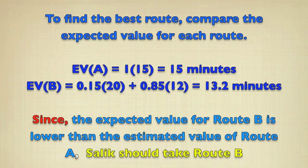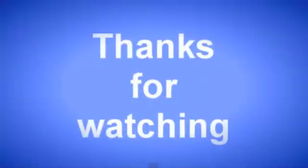So, for route A, which takes 15 minutes, you do 1 times 15, in which you get 15 minutes for expected value. You do the same with route B, now you get 13.2 minutes. Now, since the expected value of route B is lower than the estimated value of route A, Salik should take route B.